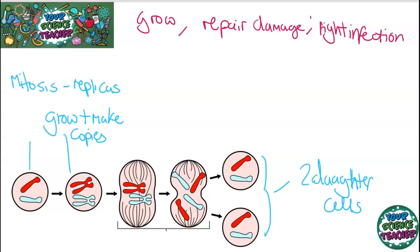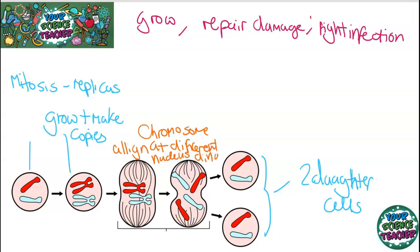After making copies of itself, the chromosomes will align at opposite ends of the cell and it will prepare to break away. This is the time when the chromosomes align themselves at different sides and they start to break away. The nucleus starts to divide, and this stage is called mitosis.